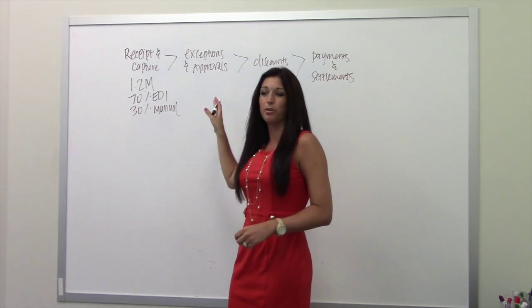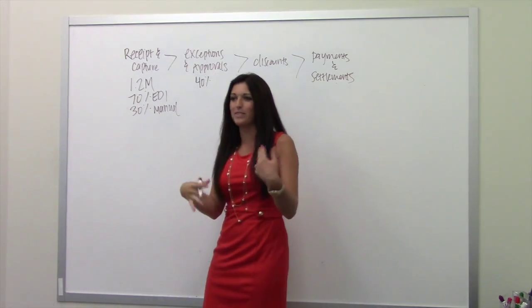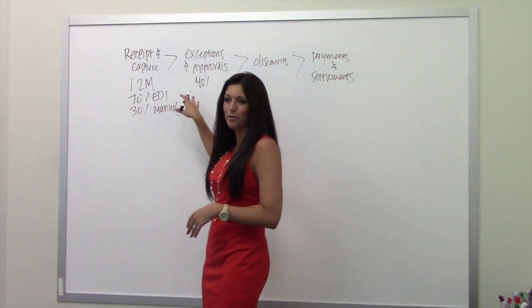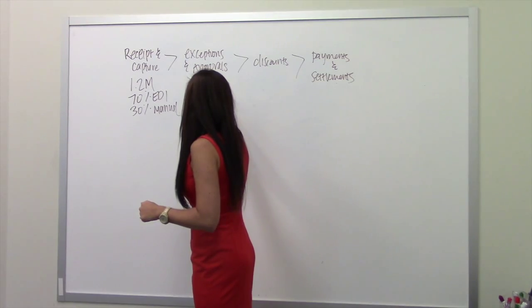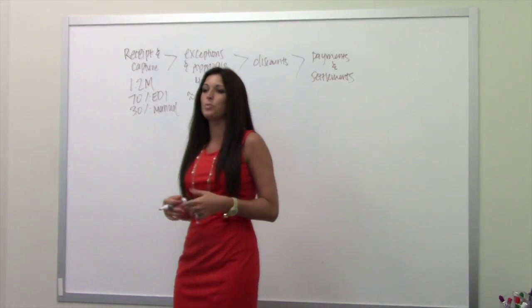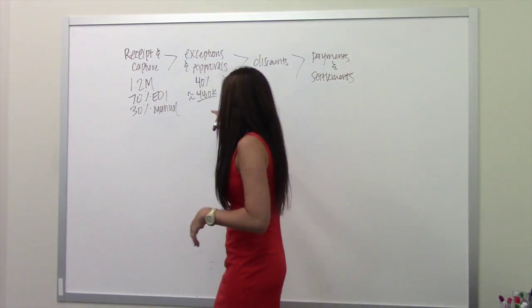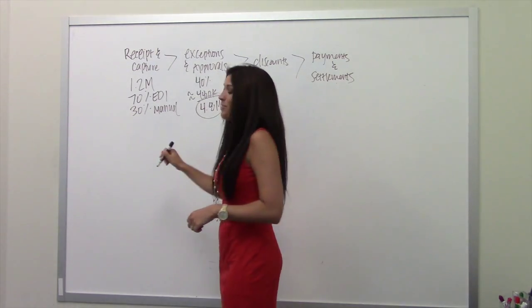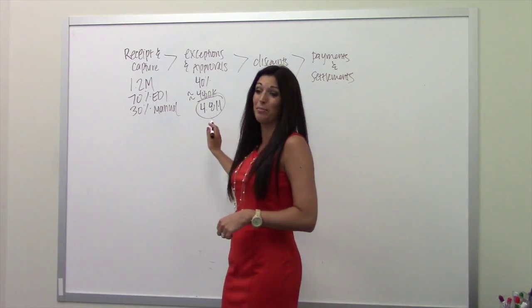Now I know from meeting with your team on your exceptions and approvals, you guys are about 40% exceptional. So 40% of those invoices that are coming in each and every year, 40% of those have some kind of error that needs to be corrected. So let's do some quick math here. 40% of your 1.2 million invoices, that's about 480,000 invoices that need to be corrected. So industry standard says anywhere from $10 to $20 per invoice is what it costs to correct those before they're ready to pay. So we'll be conservative here, we say $10. $10 times your 480,000 invoices, that is $4.8 million your team is spending on just correcting those invoices and getting them ready to pay to your supplier. So that's a huge number.